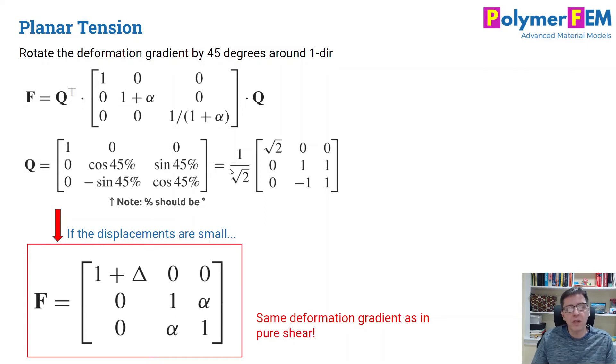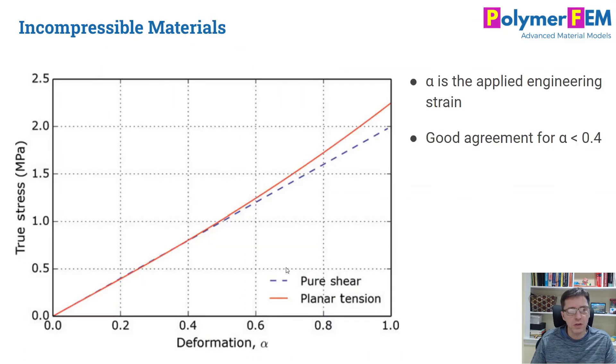And what you will get is that if the displacements are small, if alpha is small, then you get the deformation gradient that's shown at the bottom here. And what's interesting is that this deformation gradient has one, one on the diagonal terms here, and then the off terms are alpha, just like in pure shear. So what we've shown here is that a planar tension test is in fact the same as a pure shear test, if you rotate the coordinate system 45 degrees, and if the displacements are small, and if the material is almost incompressible. Kind of interesting, isn't it?